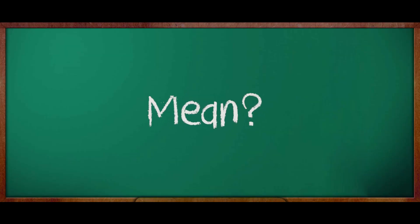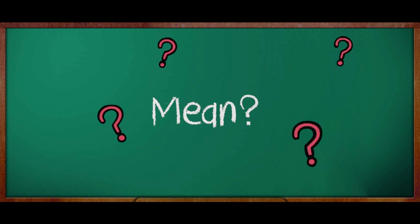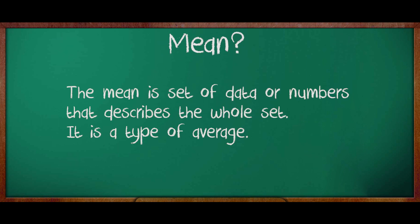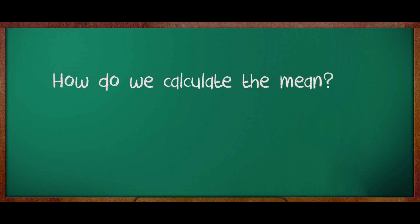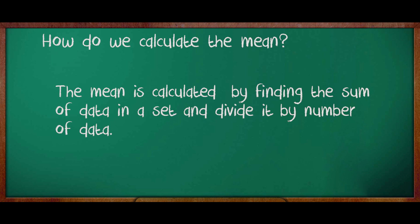What is mean? Mean is a set of data or numbers that describes the whole set. It is a kind of an average. How do we calculate the mean? First, we have to find the sum of data in a set, and then divide it by number of data. This is how the mean is being calculated.